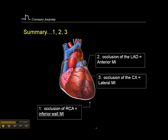These are the three main patterns: RCA occlusions with inferior wall MIs, LAD occlusions with anterior or anterior septal wall MIs, and lateral wall MIs associated with occlusion of the circumflex artery.